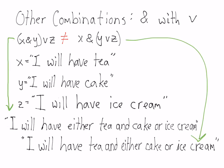The first sentence, where 'either' is in front of 'tea and cake or ice cream,' matches up with the first logical notation, and the last statement matches up with the other one. They mean different things.